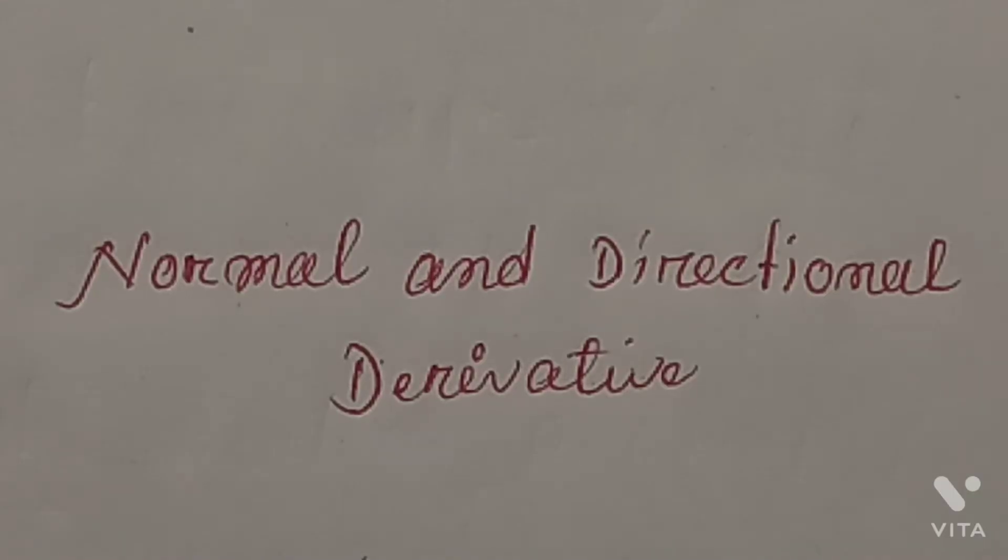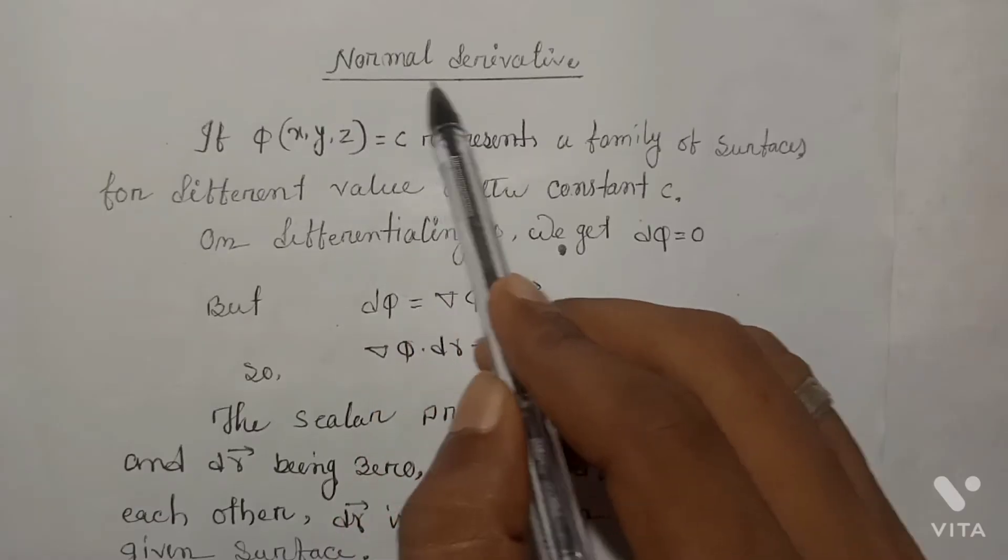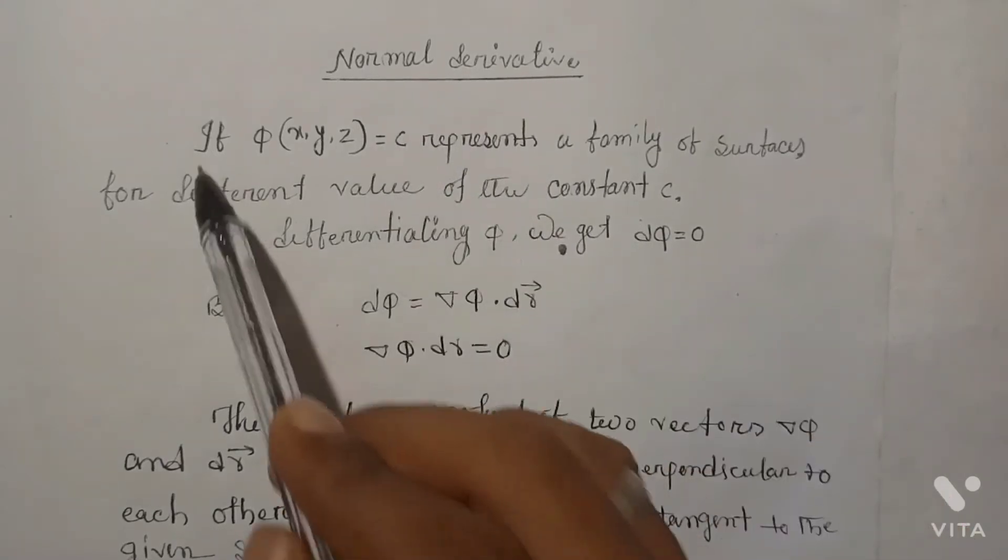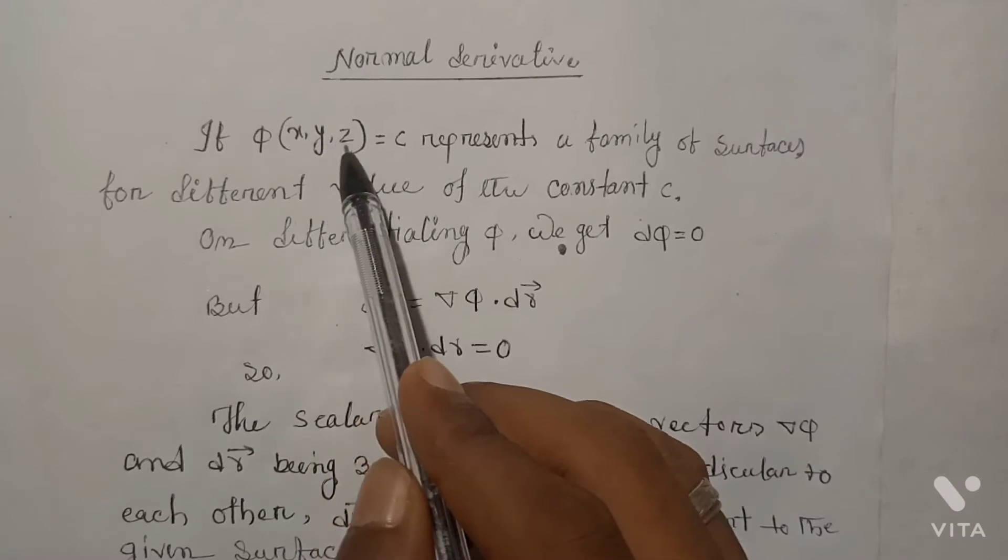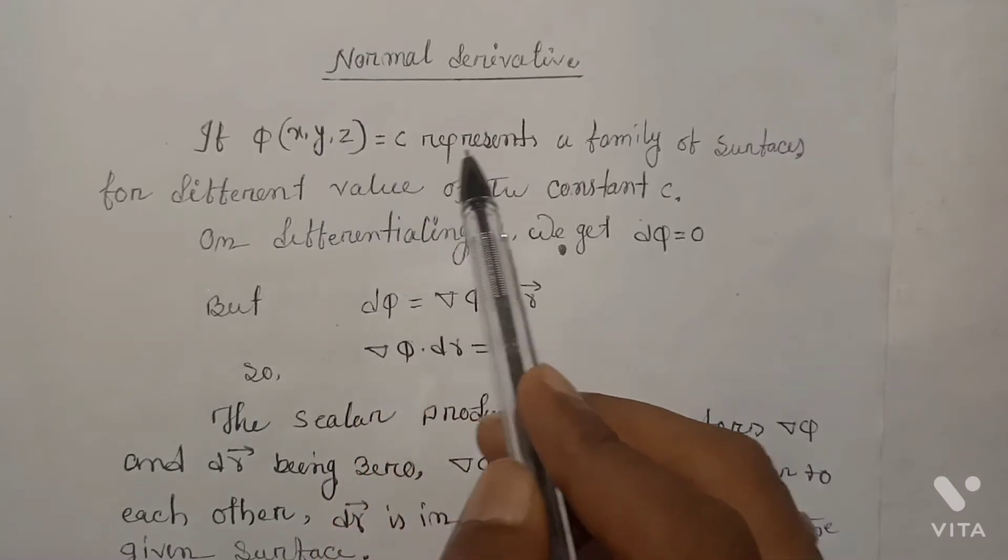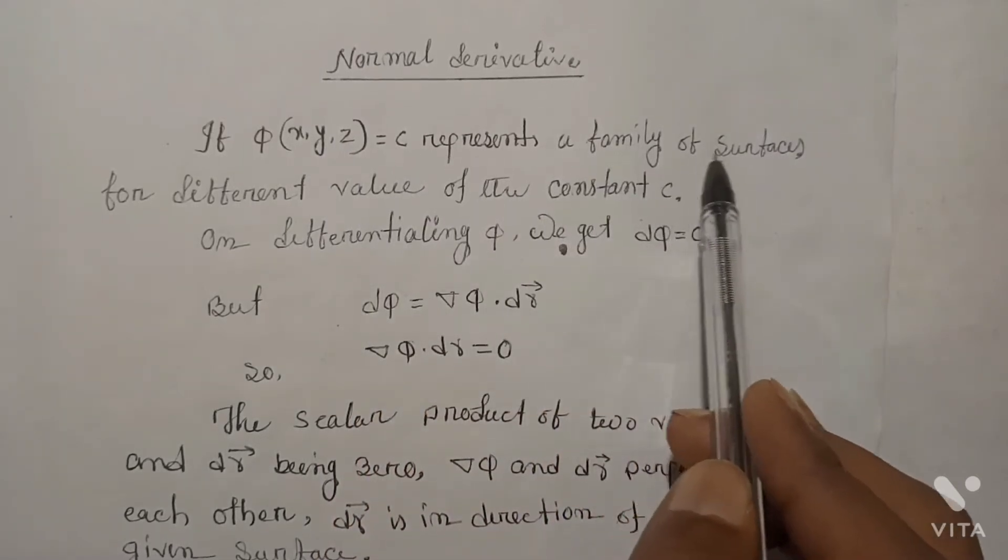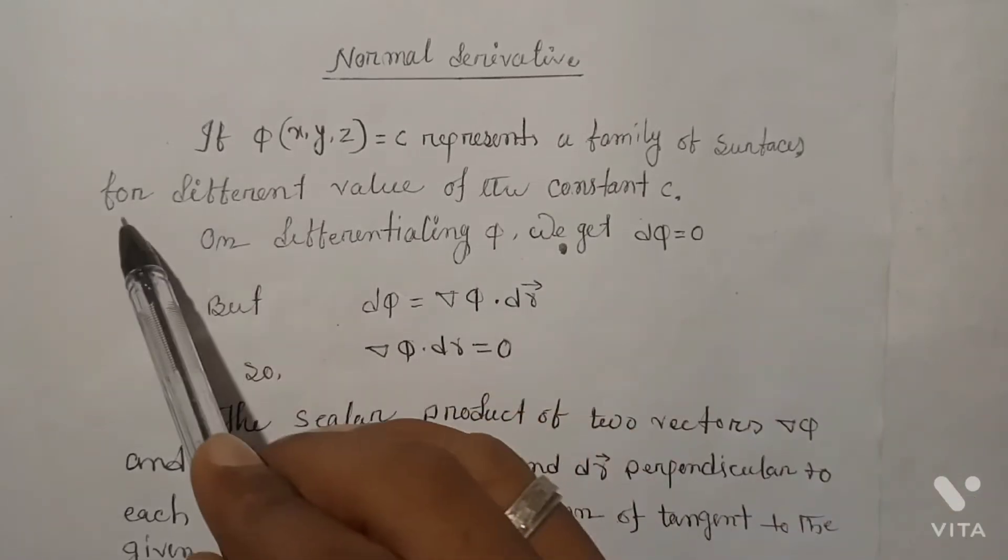Hello, I'm Abdul. In this video I will discuss normal and directional derivatives. Normal derivative: if φ(x, y, z) = c represents a family of surfaces for different values of the constant c.